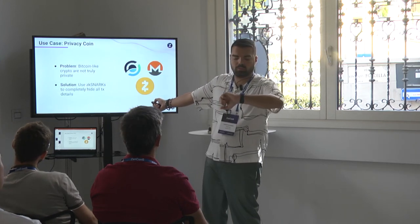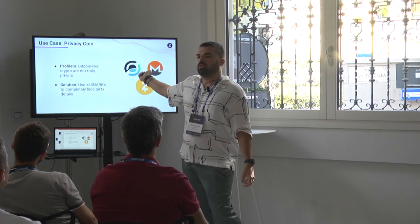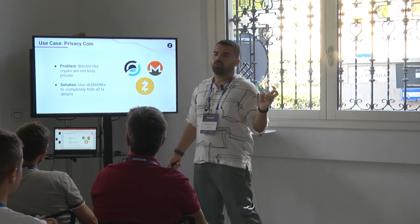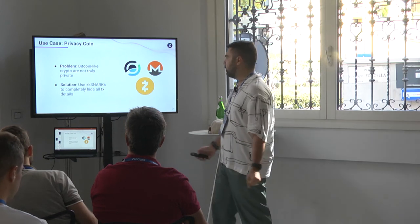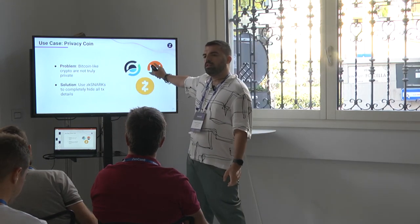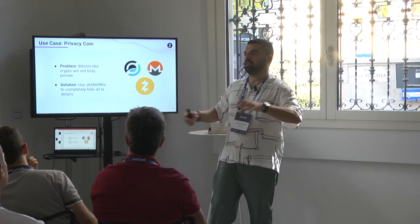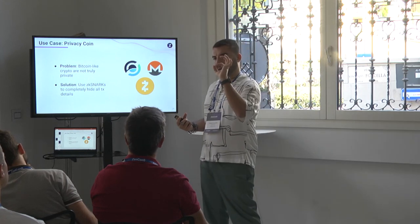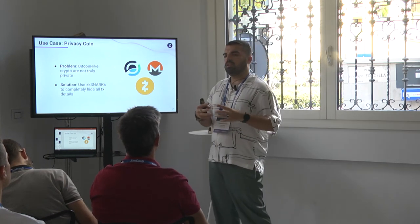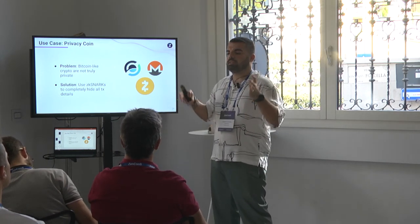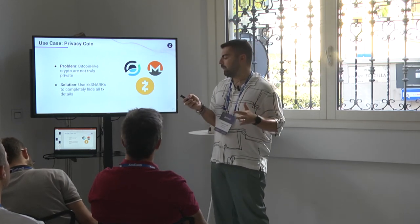Let's see some applications. Privacy coins: Bitcoin claims pseudonymous credentials, but many attacks have shown you can de-anonymize users. Cryptocurrencies like Zcash and Monero use ZK-SNARKs. In a transaction, instead of publishing the sender, receiver, and amount on the public blockchain, you publish a zero-knowledge proof that reveals nothing about who the sender or receiver is or what the amount is — but anyone can verify that the sender and receiver exist, the amount is correct, and the signature is valid. This is a true privacy coin.